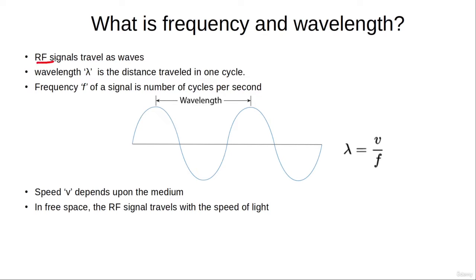Now the RF signals travel as waves. For example, this is a signal which is in the form of a sine wave.